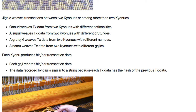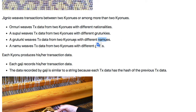Grootgi weaves transaction data from two gyonus with different NAMUs. For example, one is from Adam's family and one is from James' family — two different families. Then the transaction will be recorded by the Grootgi server.